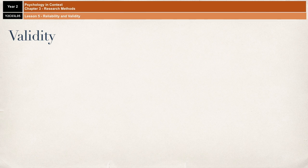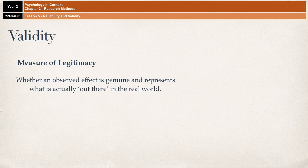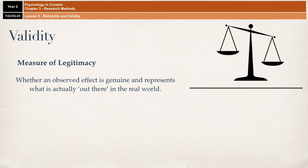Where reliability was a measure of consistency, validity is much more a measure of legitimacy. It's looking at whether an observed effect is genuine and actually represents what is actually out there in the real world. For example, a working set of scales that accurately represents weight, if they work and they're not broken.